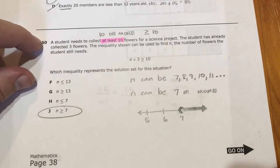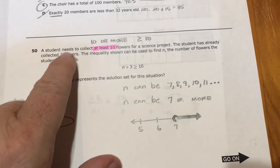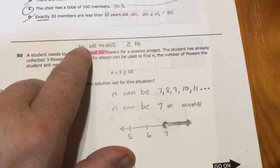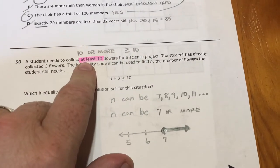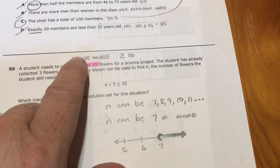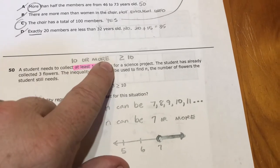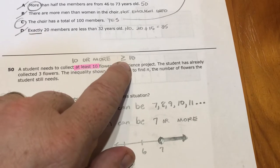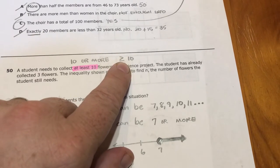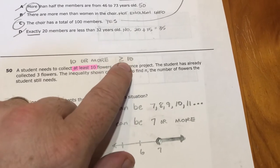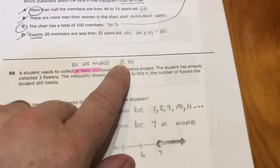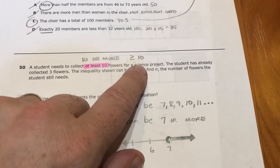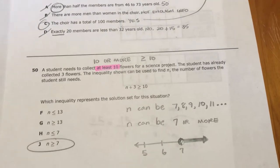A student needs to collect at least 10 flowers for a science project. At least 10 means 10 is the smallest they can collect, but they could collect more. So whatever they collect has to be equal to 10, that's what that little tiny bar means down there. They can collect 10. But we use the greater than sign above that because they can also collect more than 10.